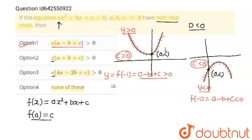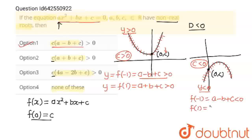Now for option 2, I'm going to find c(a + b + c). You get a + b + c when you put x = 1 in f(x). So f(1) = a + b + c, and for the first graph this is greater than 0. Similarly, f(1) = a + b + c for the second graph, and all y-coordinates are less than 0 there. In the first graph, c is positive and this value is positive — positive times positive is positive. In the second graph, c is negative and this value is negative — negative times negative is positive. So the product is positive in both graphs, meaning this statement is correct.